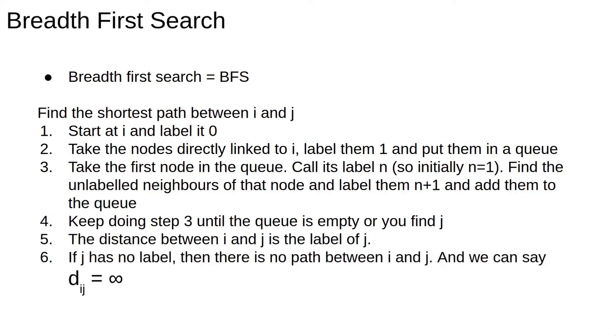If the target node has no label when we run out of nodes, then it can't be reached from node i. In this case, we say that the distance between i and j is infinite. Hopefully an example will make this a bit more clear.